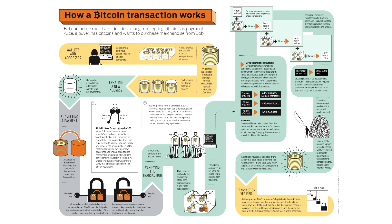The only way to get a hash that starts with a bunch of zeros is to guess and check many, many times until you stumble upon the correct answer. Everyone is racing to find this answer because the person who finds it gets to write a transaction that generates free coins and puts them into an address of their choosing. Anyone can stumble on the answer at any time, so the difficulty of the problem is adjusted by the network until the correct answer is found, on average, every 10 minutes.